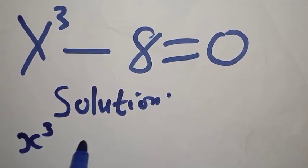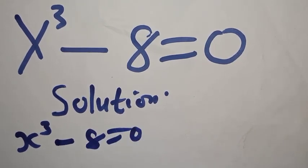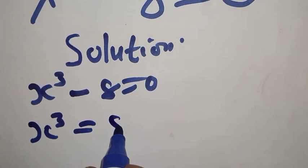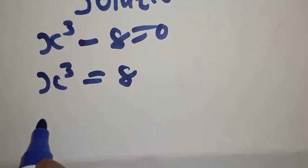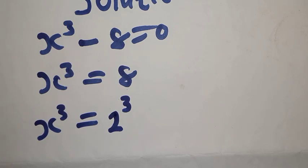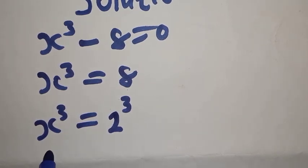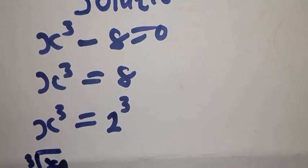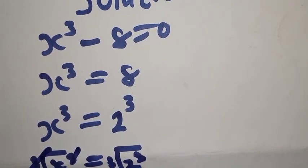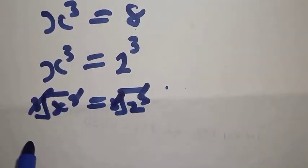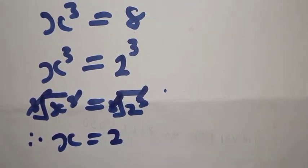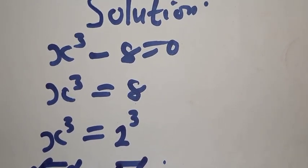Solution: s raised to power 3 minus 8 is equal to 0. This can be written as s raised to power 3 is equal to 8 — the minus crosses the side and becomes plus. So s raised to power 3 equals 2 raised to power 3. Taking the cube root of both sides, this cancels this, therefore s is equal to 2. But is s equal to 2 the only answer for s raised to power 3 minus 8 equals 0? No.